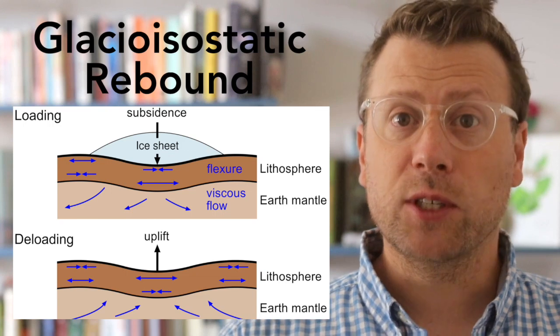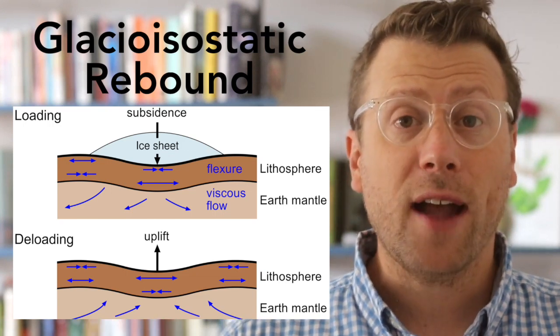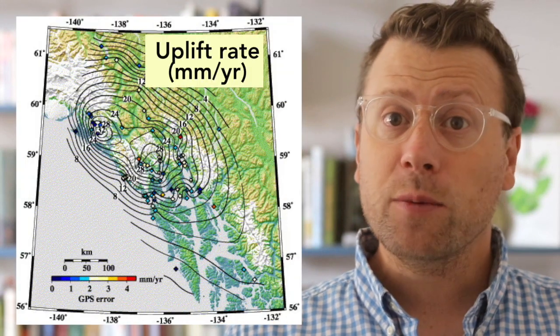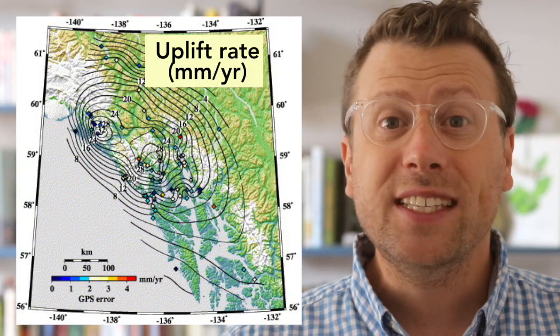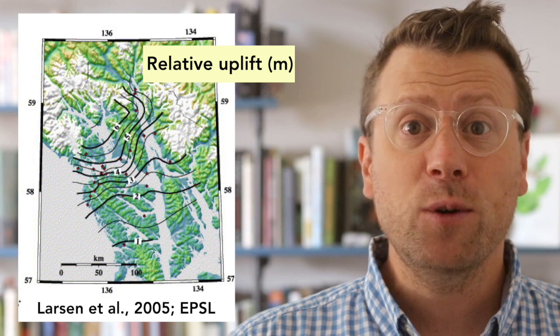In addition to retreat, the glaciers are experiencing dramatic thinning, losing up to 5 meters of thickness per year. All of that ice loss results in glacial isostatic rebound, where Earth's crust springs back upward after the weight of the ice is removed. For more on isostasy, check out the video on Denali National Park. GPS studies show that the Glacier Bay area is experiencing up to 3 centimeters per year of isostatic uplift, and that the mountains have risen as much as 8 meters in the last 250 years.